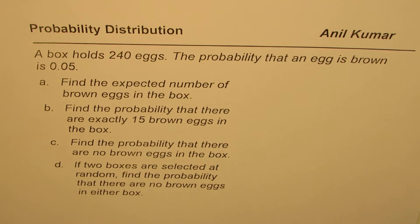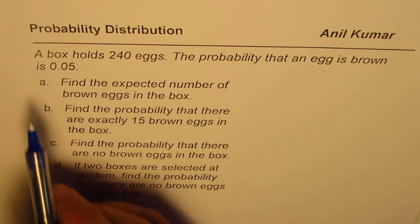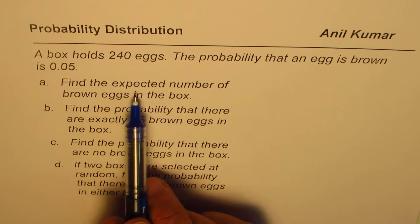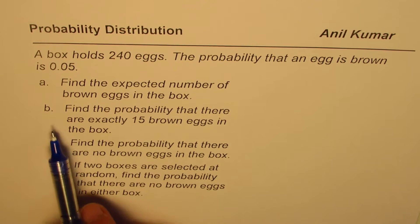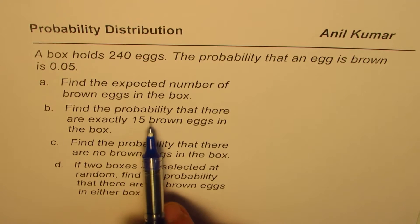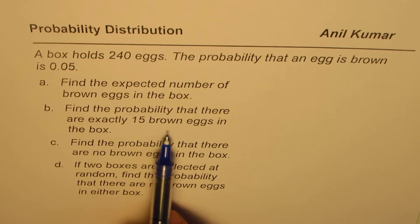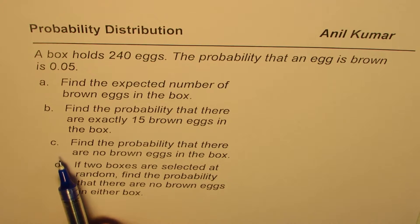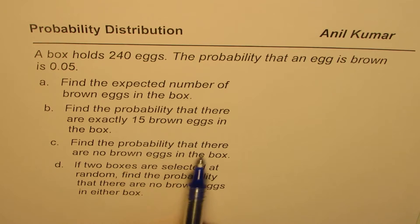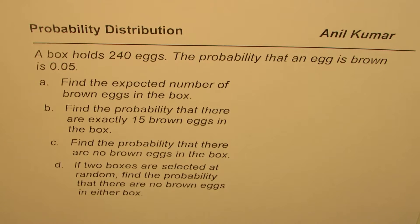Here is a part of this question. A box holds 240 eggs. The probability that an egg is brown is 0.05. Part A: find the expected number of brown eggs in the box. Part B: find the probability that there are exactly 15 brown eggs in the box. Part C: find the probability that there are no brown eggs in the box. Part D: if two boxes are selected at random, find the probability that there are no brown eggs in either box.